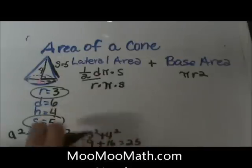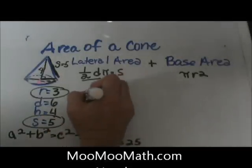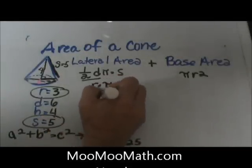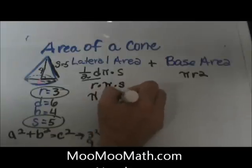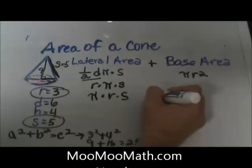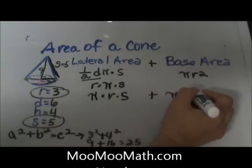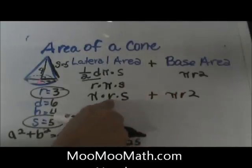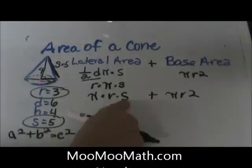π times the radius times the slant height. Then I've got the base area over here which I'm going to add as πr². Now I only have two variables, the r and the s. So let's plug in our radius and our slant height. So π × 3 for the radius × 5 for the slant height